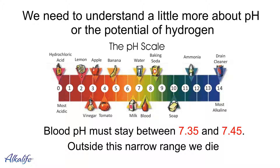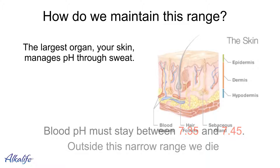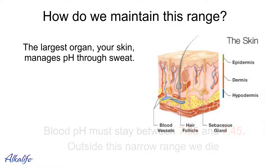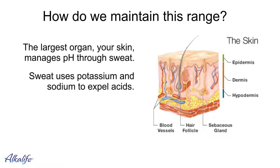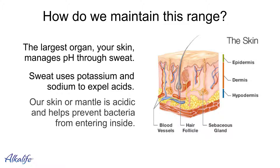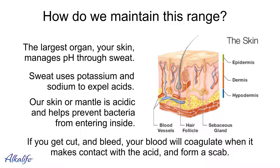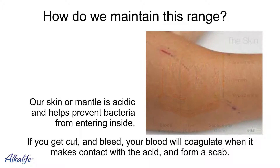So how do we maintain this narrow range? Well, the largest organ — your skin — manages pH through sweat. Sweat uses potassium and sodium to expel acids. Our skin or mantle is acidic and helps prevent bacteria from entering inside. But if you get cut and bleed, your blood will coagulate when it makes contact with the acid and form a scab.